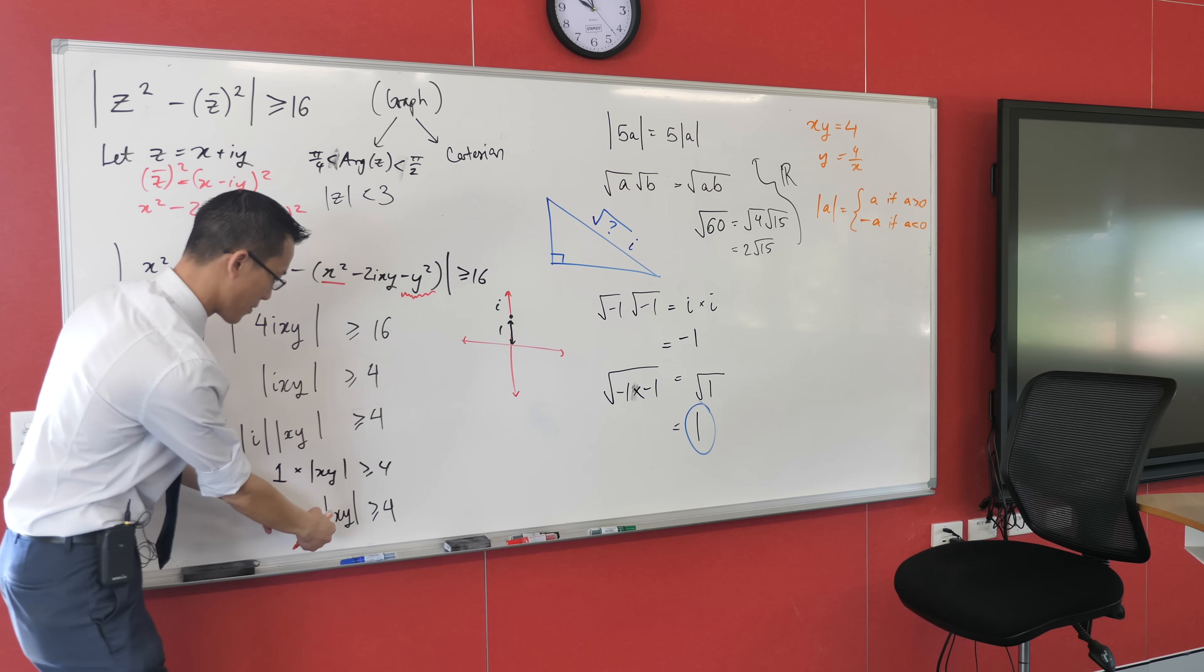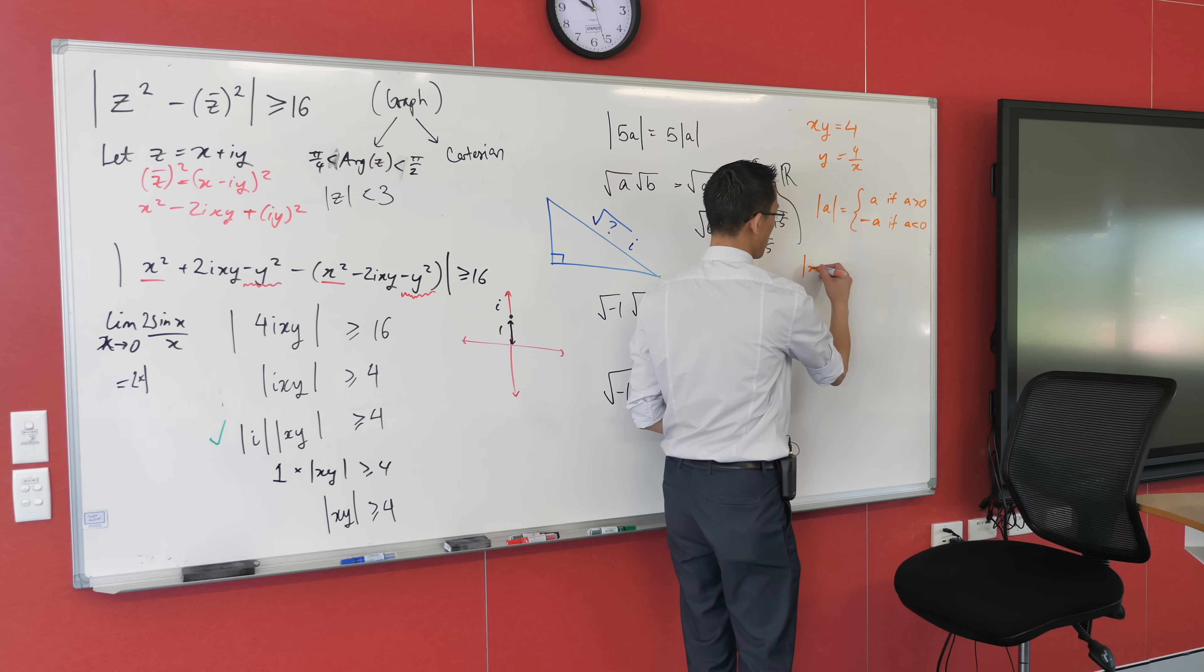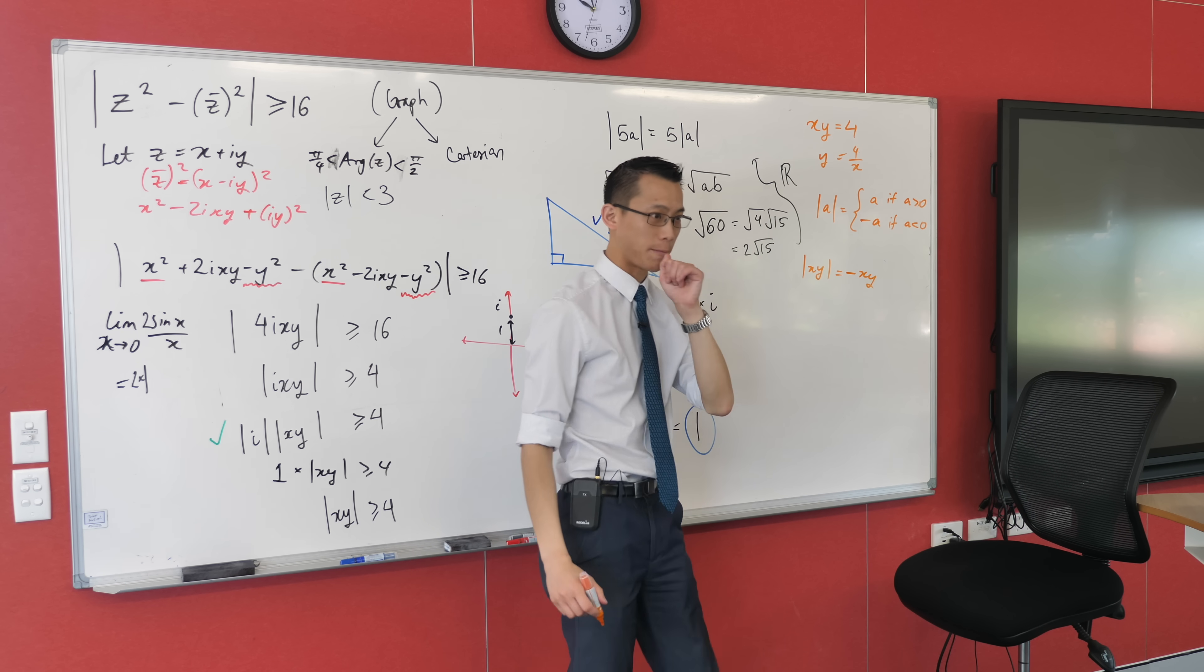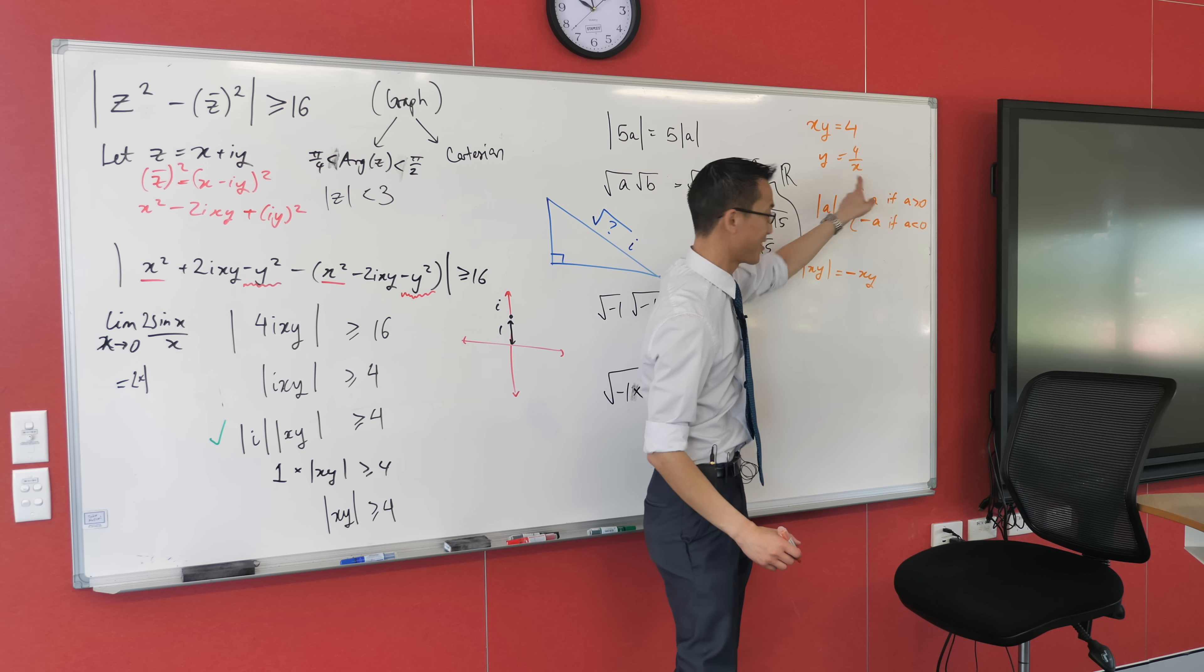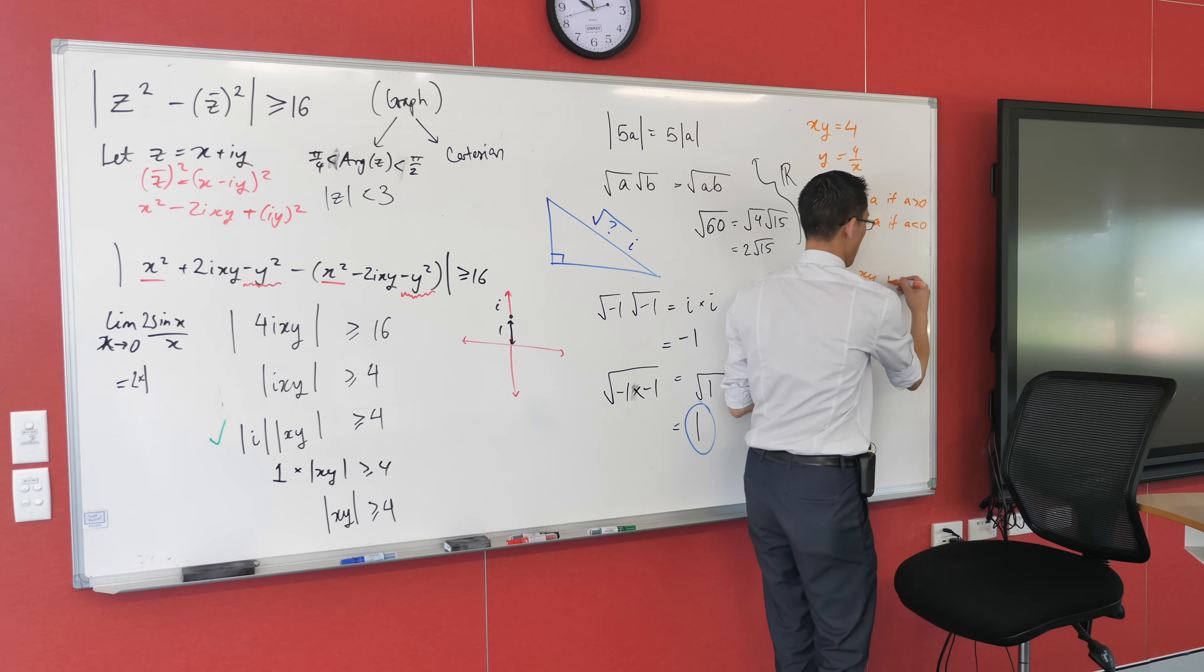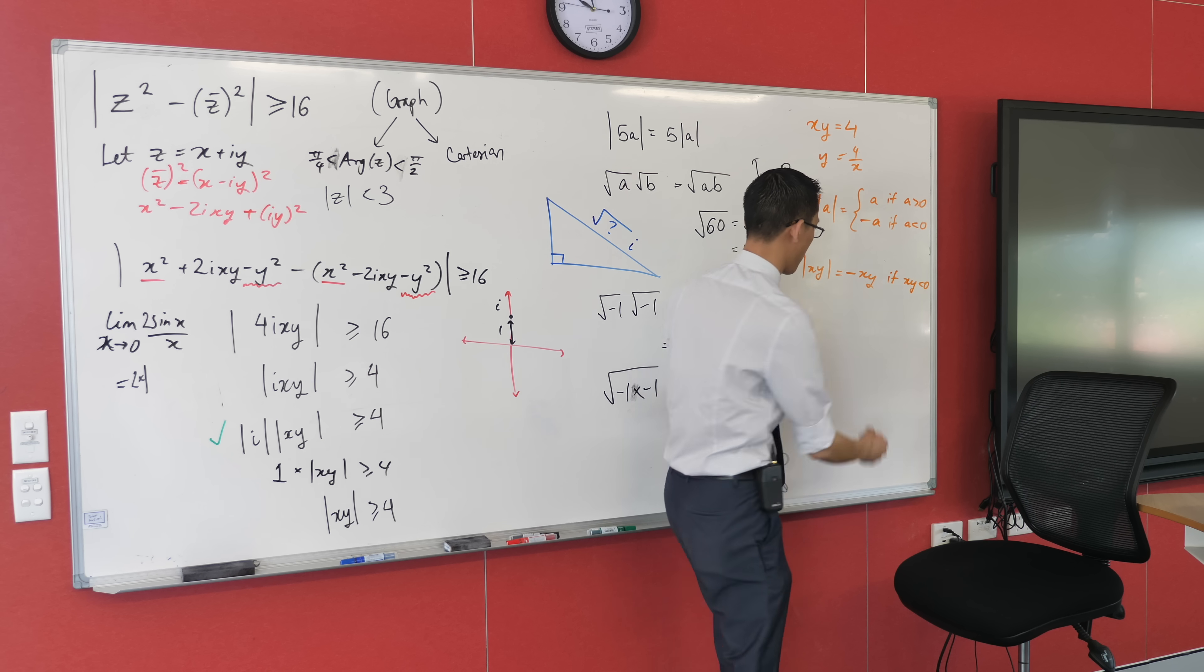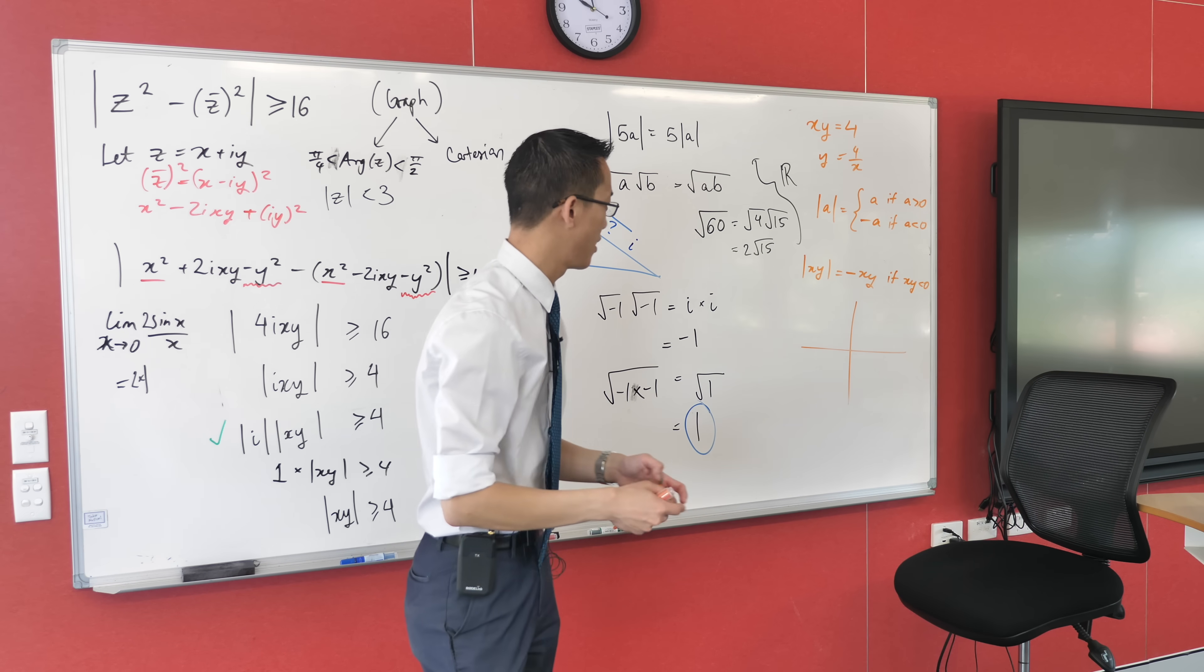Now, for that reason, how do I interpret when is this thing equal to, when is the absolute value of x, y, when is it equal to minus x, y, and not just x, y? On what condition? Look at how I did it. It's if this thing inside is negative. If x, y is negative. Now, think about this.